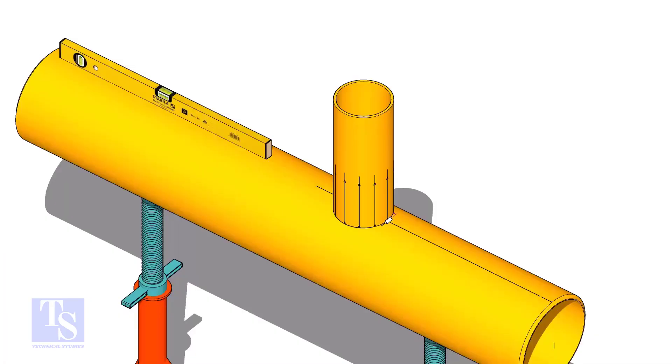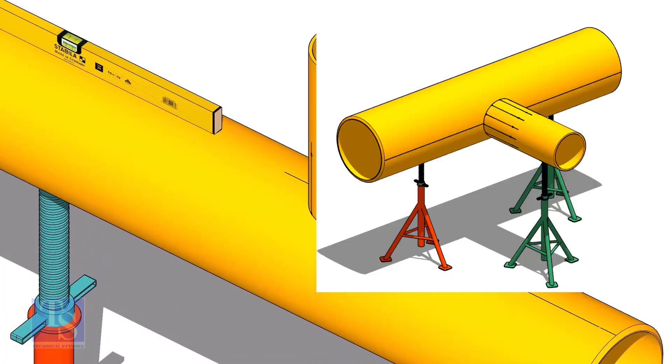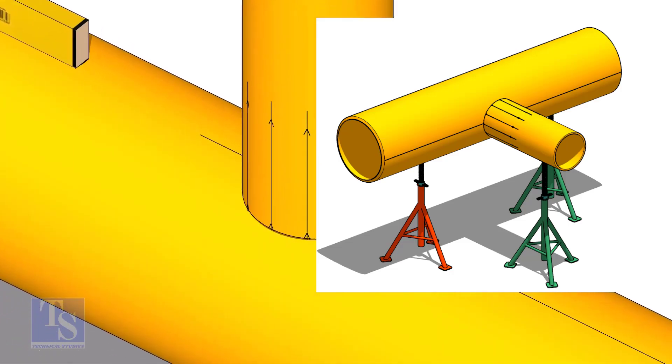Tack weld the branch on the header just to stand it vertically. If the pipes are large, you can do it in the horizontal position also.